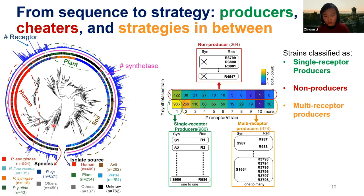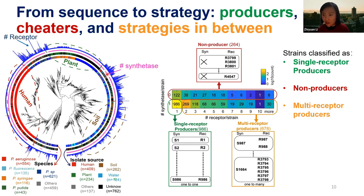We reconstruct the iron interaction network, first by counting. This is the phylogeny of about 2,000 strains from plants, soil, and human microbes. If you count how many synthetases are present, some strains have one and some have none. And if you count how many FpvA receptors there are, the number varies a lot. We find three types of iron strategies used by these 2,000 Pseudomonas strains.